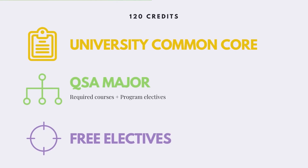Overall, there are three components to the coursework for the program. First, the university common core — these are palette classes in a variety of different fields that all undergraduate students take at HKUST, no matter what their major is. Second, there is the core of the program itself, the required courses as well as the program electives that make up the Quantitative Social Analysis program. Third, students have a complement of free electives — classes that they can use to pursue a minor in a different discipline or pursue interests beyond the QSA program.